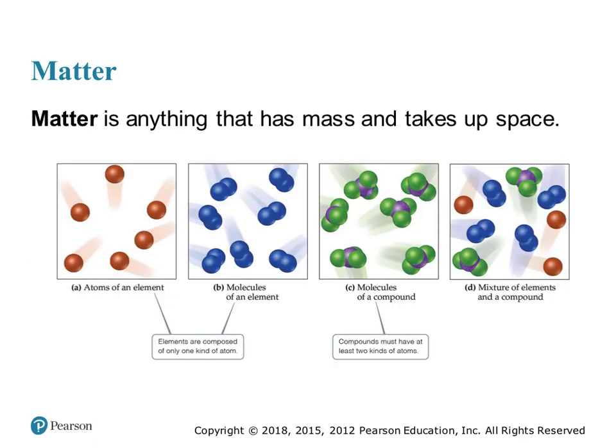There are different types of matter. We have elements, which are composed of only one type of atom, and those elements can be either monatomic, as pictured in box A, or diatomic, pictured in box B. Diatomic elements are two atoms of the same element bonded together.